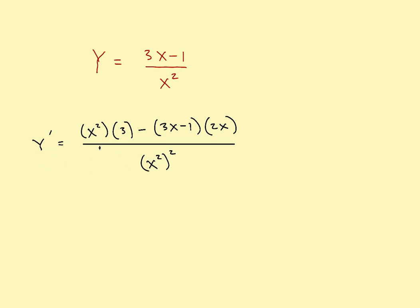Now you can simplify it, but in this case we'll just leave it in the expanded form. So: the denominator times the derivative of the numerator, minus the numerator times the derivative of the denominator, divided by the denominator squared. The results are pretty easy.